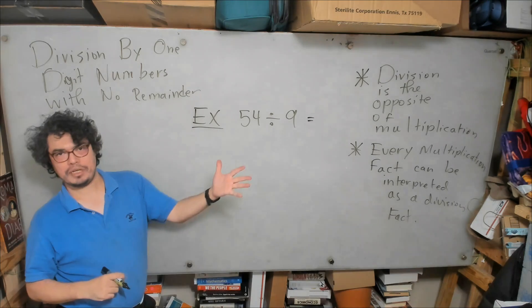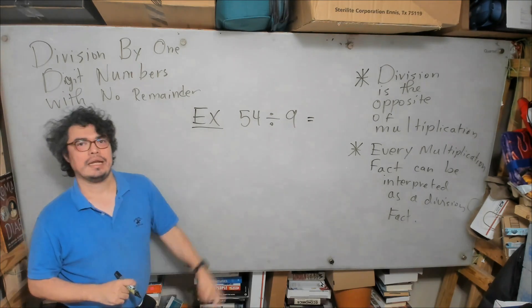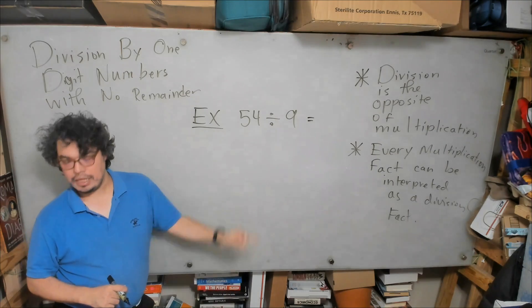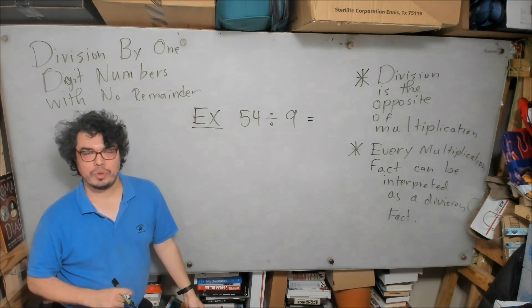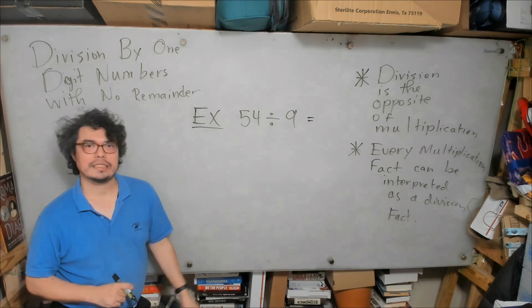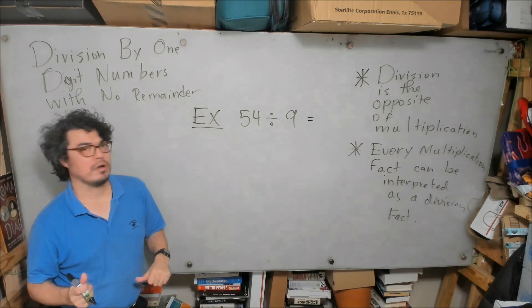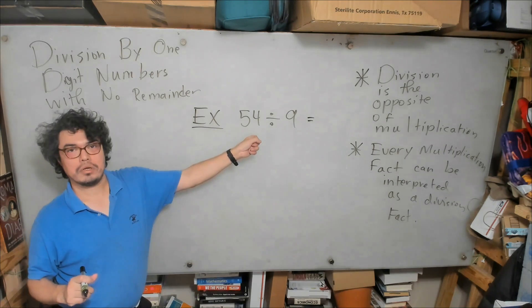We go through our multiplication tables for 9. 9 times 1 is 9, 9 times 2 is 18, 9 times 3 is 27, 9 times 4 is 36, 9 times 5 is 45, 9 times 6 is 54.